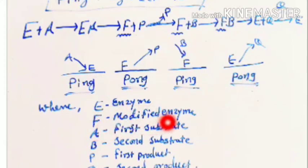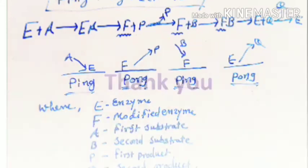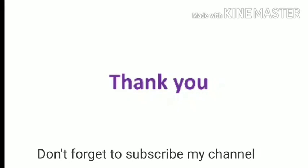To summarize the variables: E is the original enzyme, F is the modified or intermediate enzyme, A is the first substrate, B is the second substrate, P is the first product, and Q is the second product. In the next video, we will discuss the factors affecting enzyme action. Thank you.